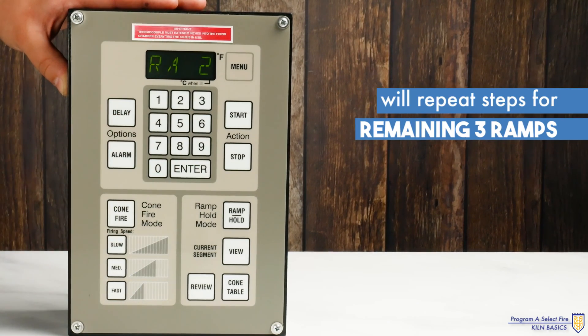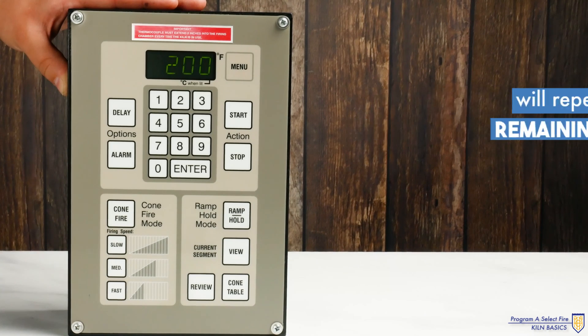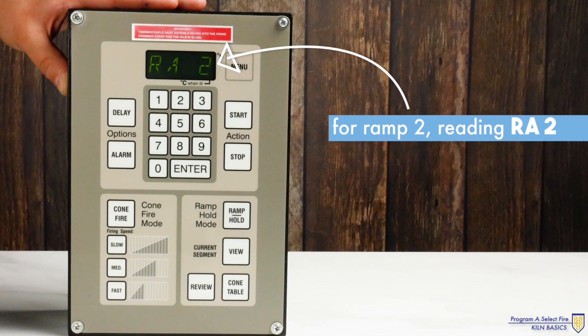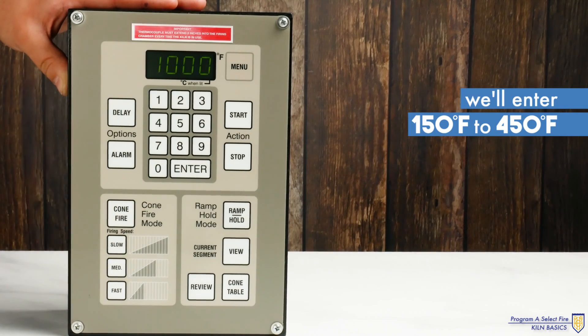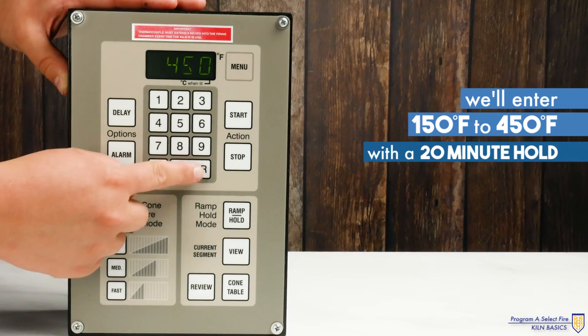It will now repeat these same steps for the remaining three ramps. For ramp 2 reading RA2 we'll enter 150 degrees Fahrenheit to 450 degrees Fahrenheit with a 20 minute hold.